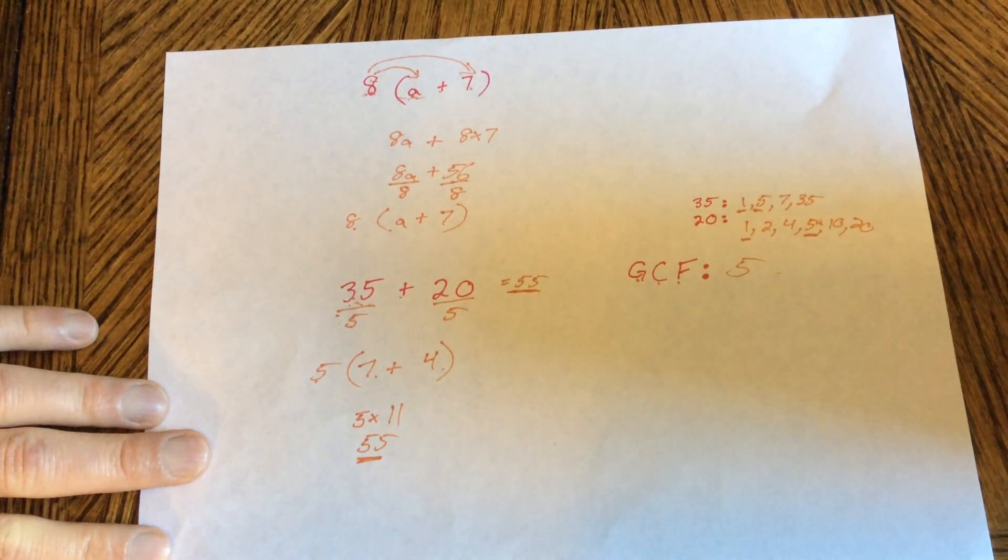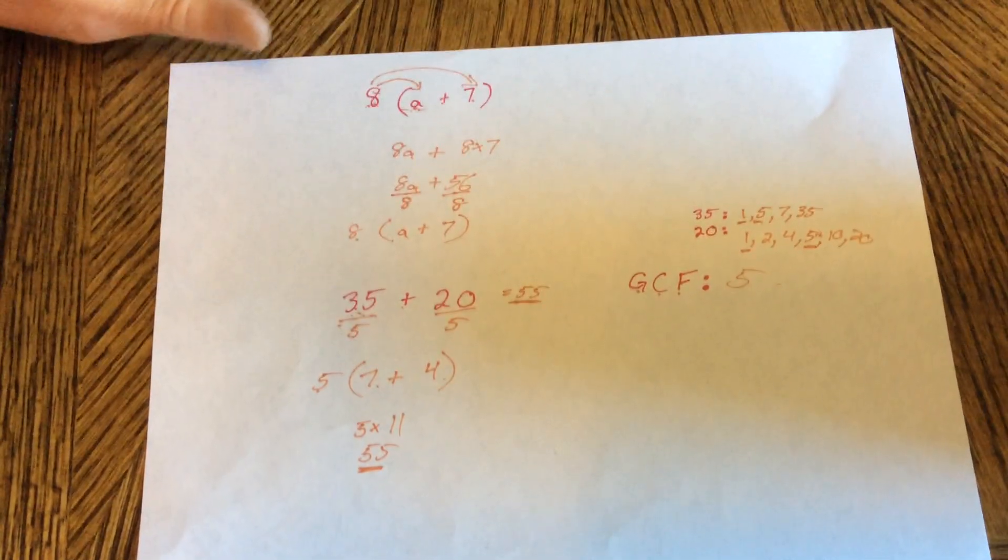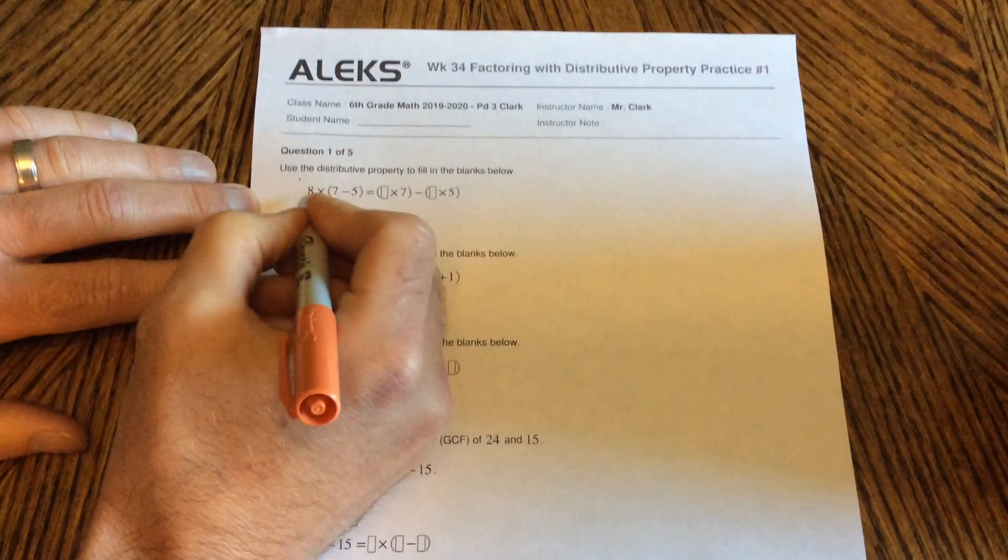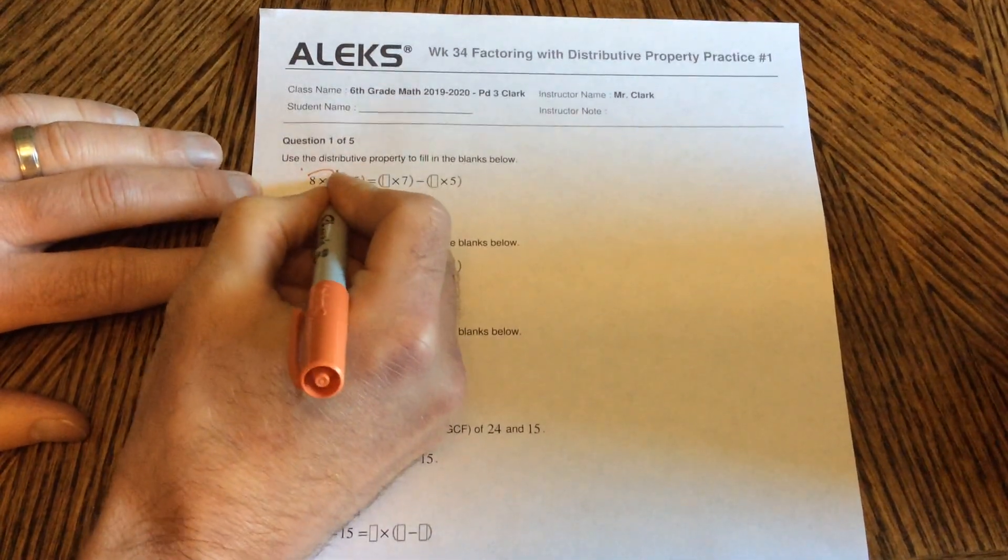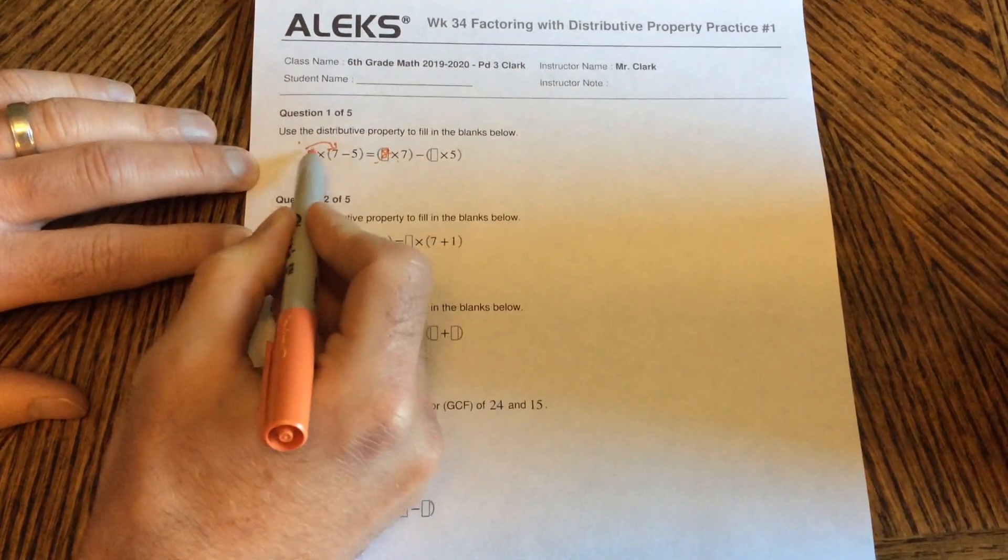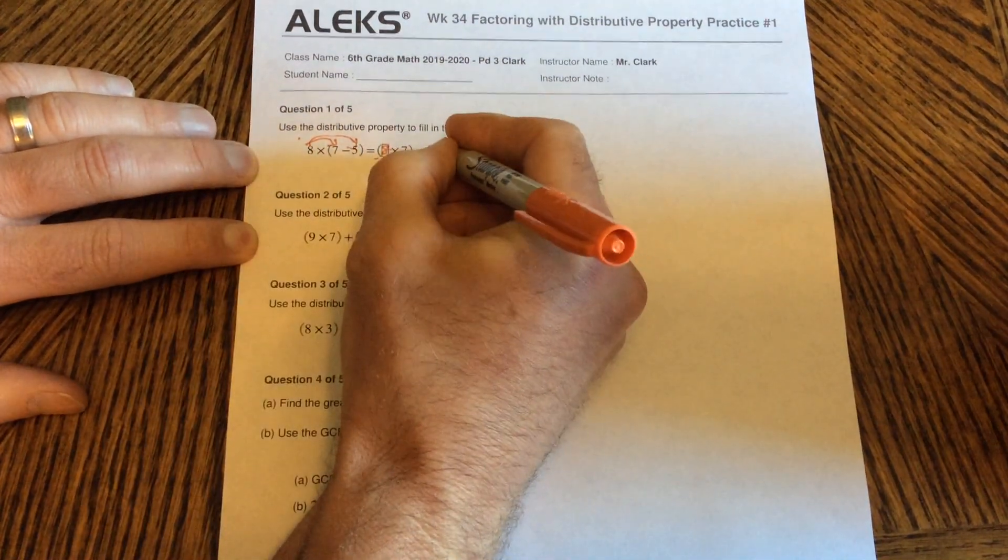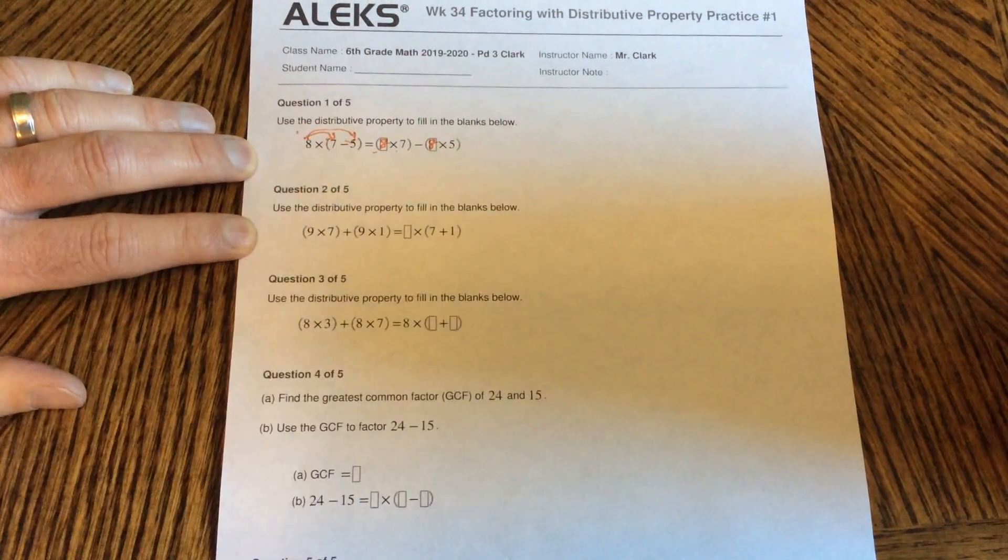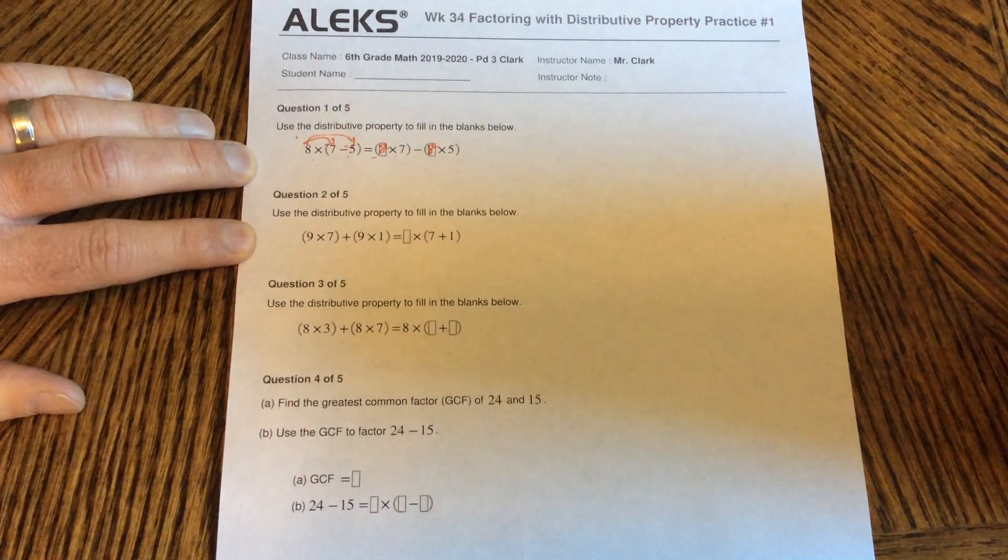This is very important when we get to algebra, being able to do this. So let's do your assignment for the day. Question 1. There's only 5 on today. So really use this video to help. Use the distributive property to fill in the blanks below. So this was a review of yesterday. 8 times 7 minus 5. We can first do 8 times 7 minus 8 times 5. We don't have to solve it. That's all this problem asks. We could solve with this or this, but we don't need to.